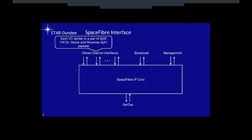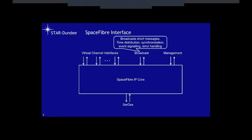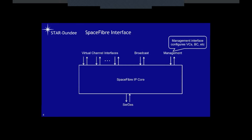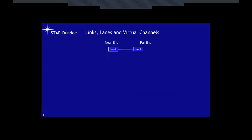There's a broadcast interface similar to a SpaceWire timecode interface, but more extensive — we can broadcast short messages, distribute time, do synchronization, event signaling, and error handling. There's also a management interface for configuring and controlling the Space Fiber interface. A lane provides basic throughput for the link, and we have the link layer at both the near end and far end.